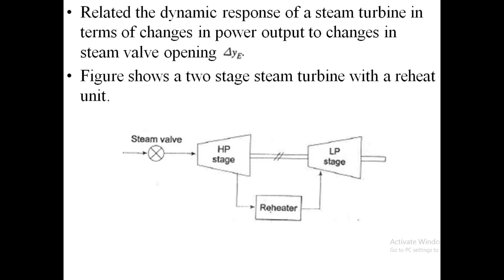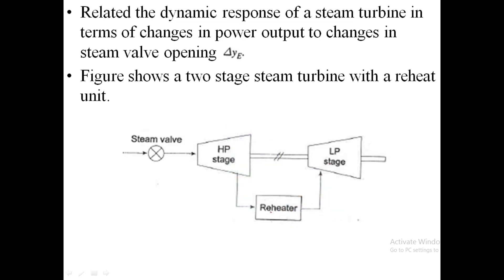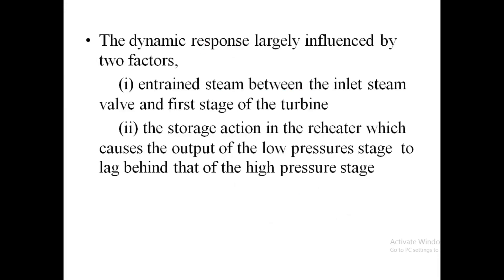Now we are representing the steam turbine — a two-stage steam turbine with a reheat unit. In this diagram there is a steam valve, a high pressure and low pressure stage, and a reheater. The dynamic response is largely influenced by two factors: one is the steam between the inlet steam valve and the first stage of the turbine, and the storage action in the reheater which causes the output of the low pressure stage to lag behind that of the high pressure stage.